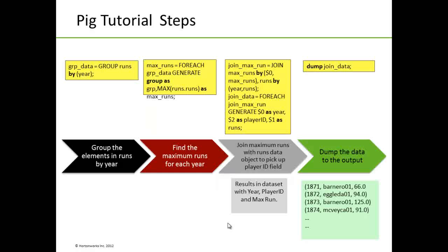In the Pig tutorial implementation, we group the elements in runs by year using the group command, creating a new relation called group data. We then find the maximum runs for each year using the forEach operator to generate a tuple expression of group as group and max runs. We join the maximum runs with the runs data objects to pick up the player ID field, resulting in a data set with year, player ID, and max run. We then dump to the screen showing year, player ID, and max runs for that player.